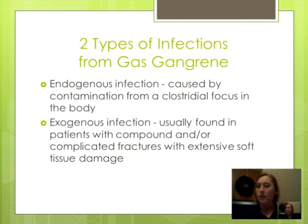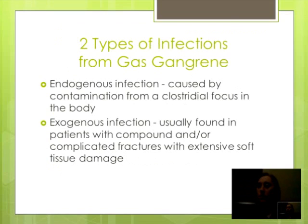There are two types of infections from gas gangrene: endogenous and exogenous. An endogenous infection is caused by contamination from a clostridial focus in the body. An exogenous infection is usually found in patients with compound and complicated fractures with extensive soft tissue damage.